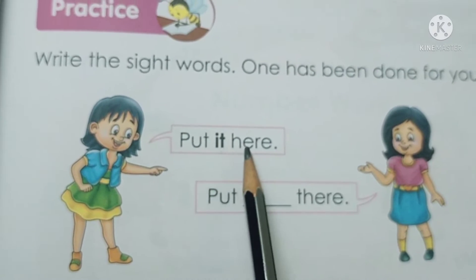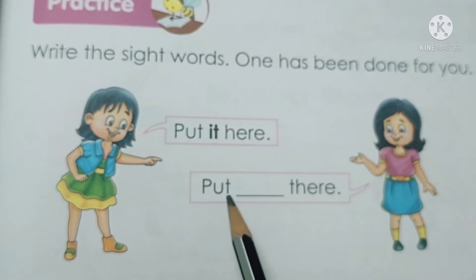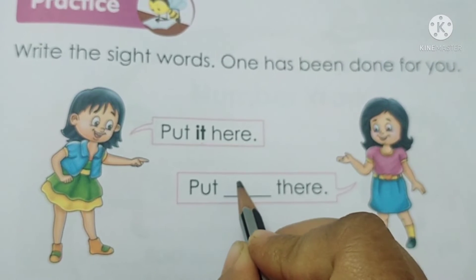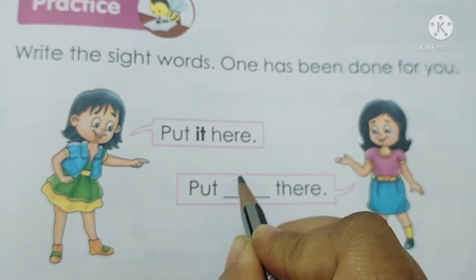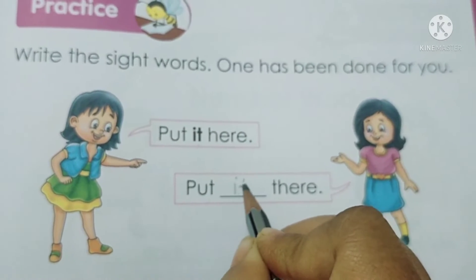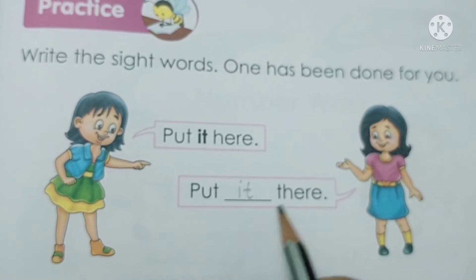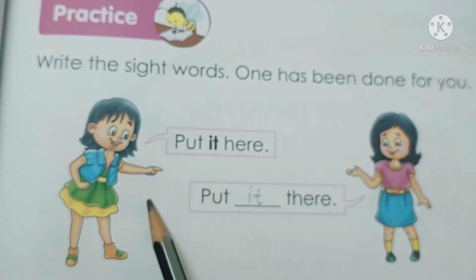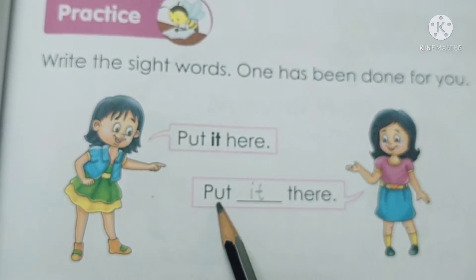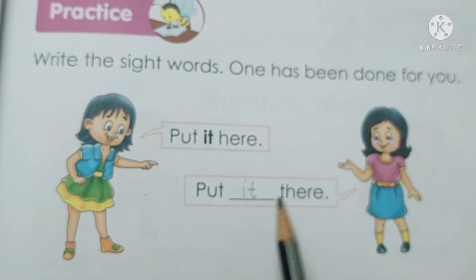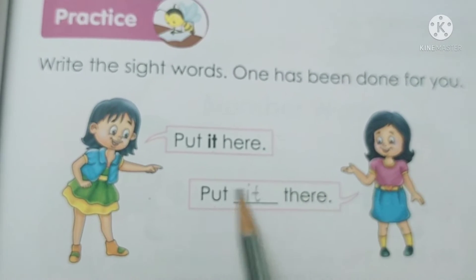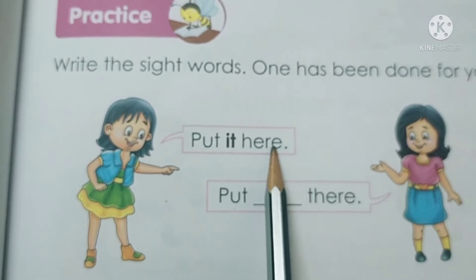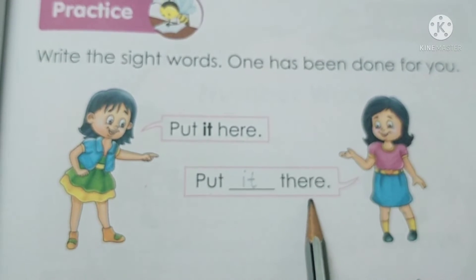Put it here. Now sight words, we are going to write here. Isay yaha rakhho, aur isay waha rakhho. Yeh doonu aise bolna chaare — put it here, put it there.